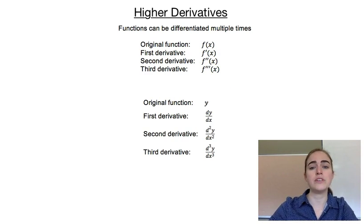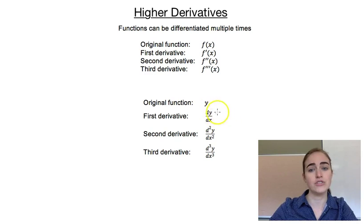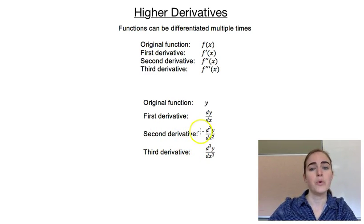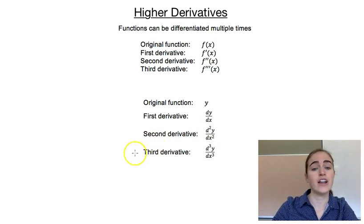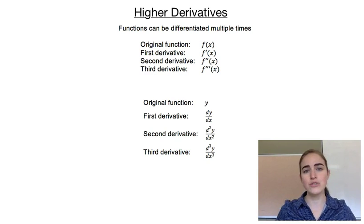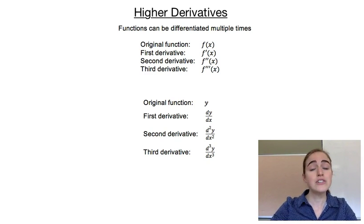The other notation we were using was if we had our original function called y, then our derivative was dy dx — so differentiating y with respect to x. That's our first derivative. If we want to differentiate again to find our second derivative, we would write that as d squared y dx squared, putting those little twos in there. If we wanted to differentiate a third time, we'd have d cubed y dx cubed. So we can continue that one on as well. That's the notation.